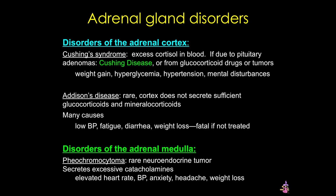Finally, pheochromocytoma is a rare neuroendocrine tumor that secretes catecholamines, leading to a very high heart rate, anxiety, often severe headaches, and elevated blood pressure. Luckily, these tumors are usually benign and can be removed surgically.